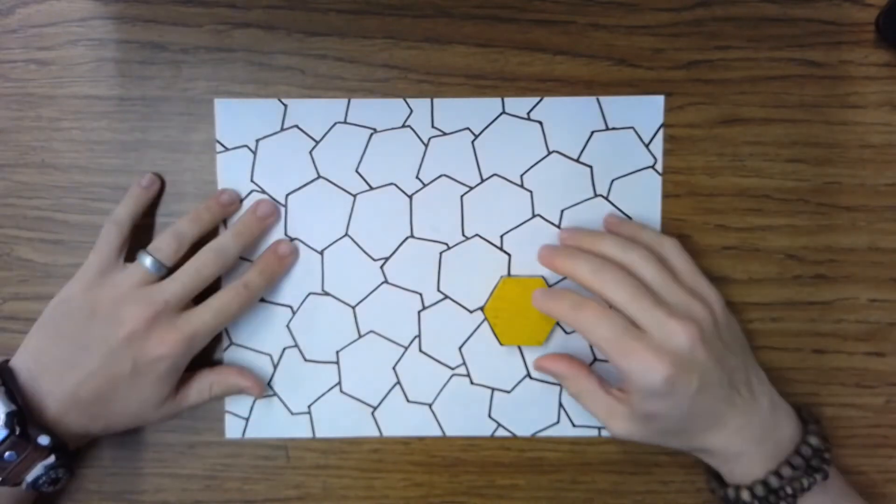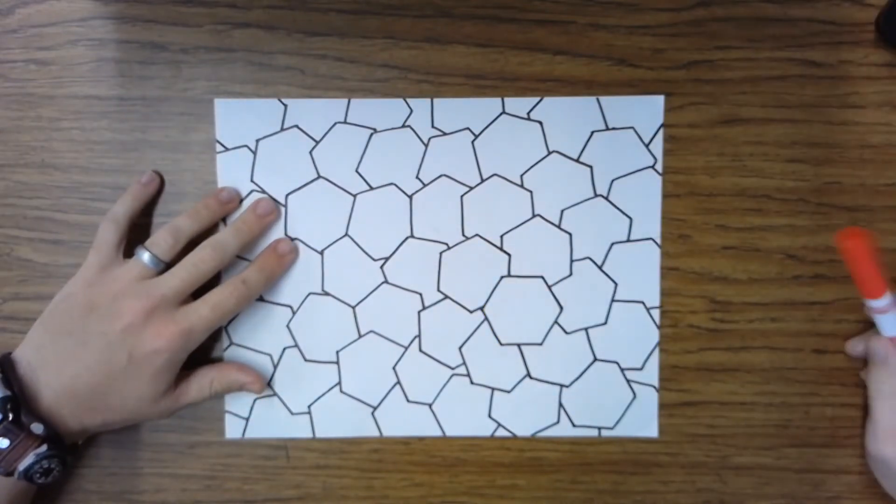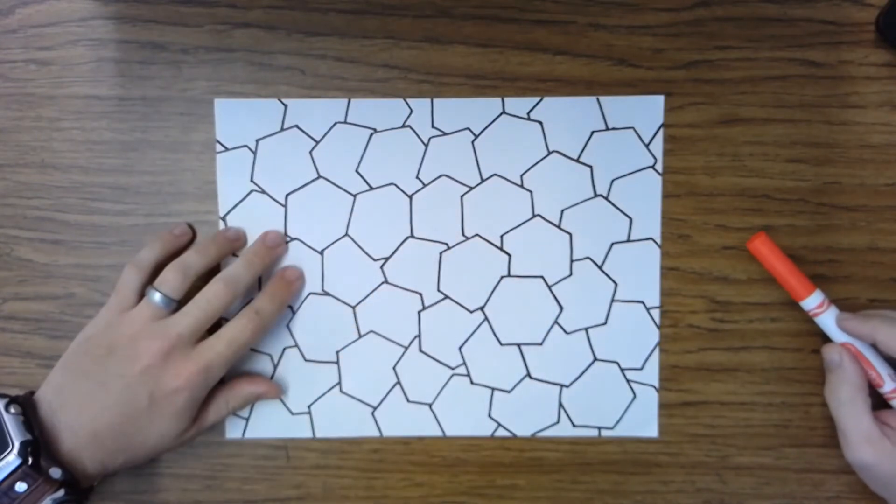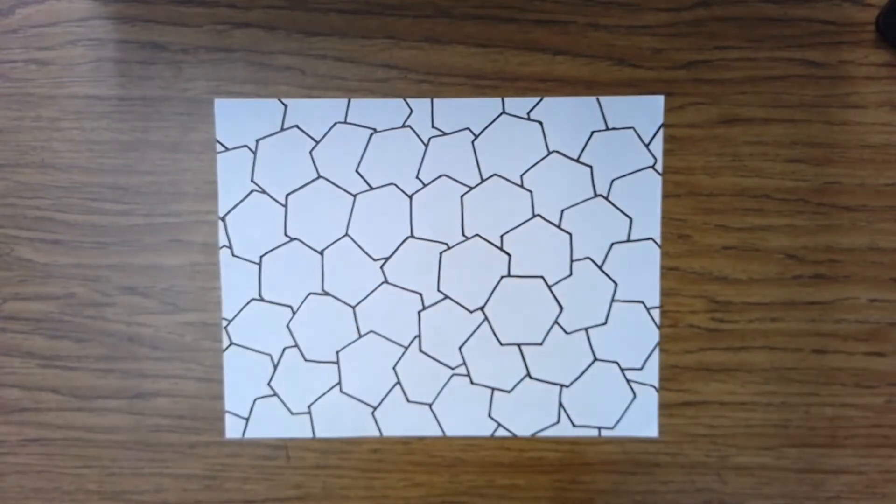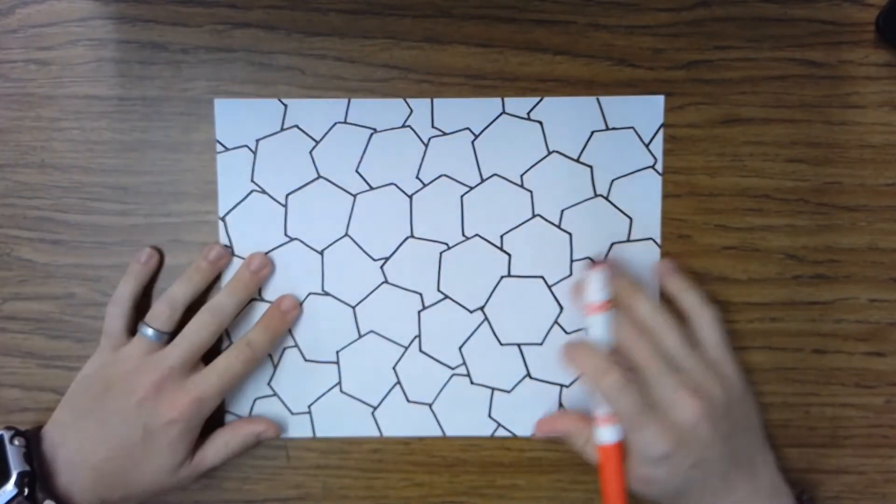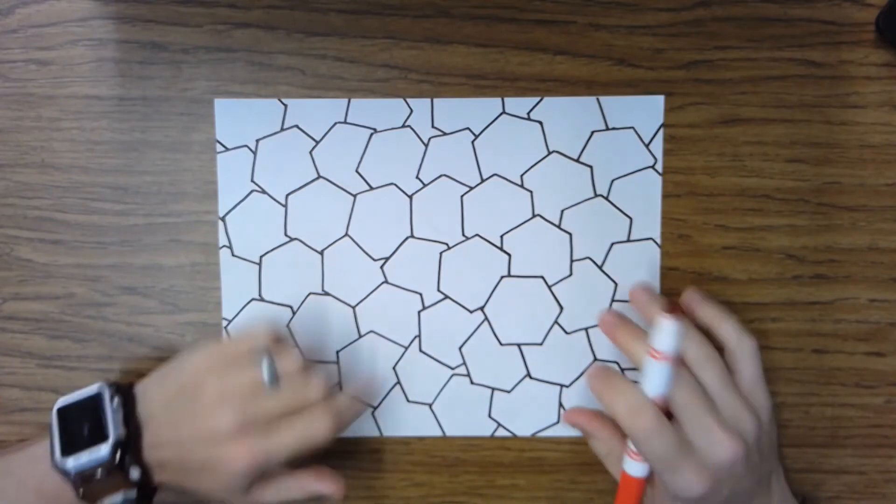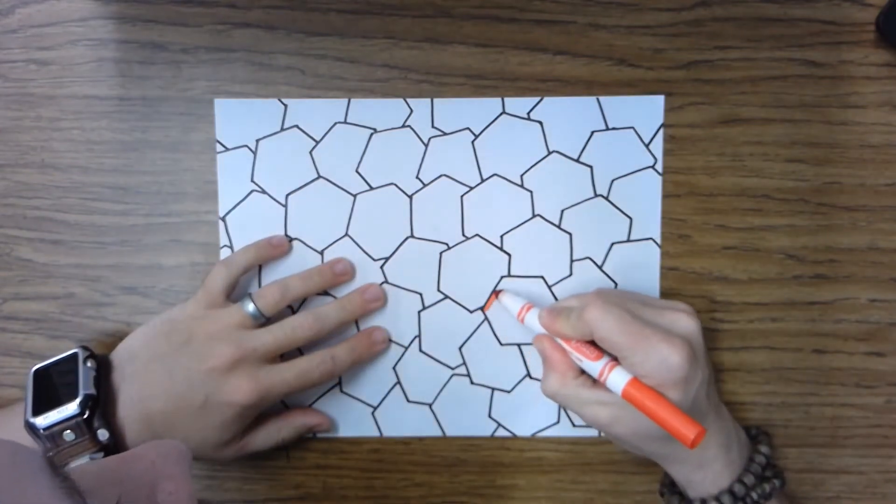I just think it looks cool. So our last step here is to add our accent color, our emphasis color. We're going to not color in everything. We're only going to color in a few of these shapes so that it's a focal point, so it really stands out. So I'm going to start with the first one I traced.